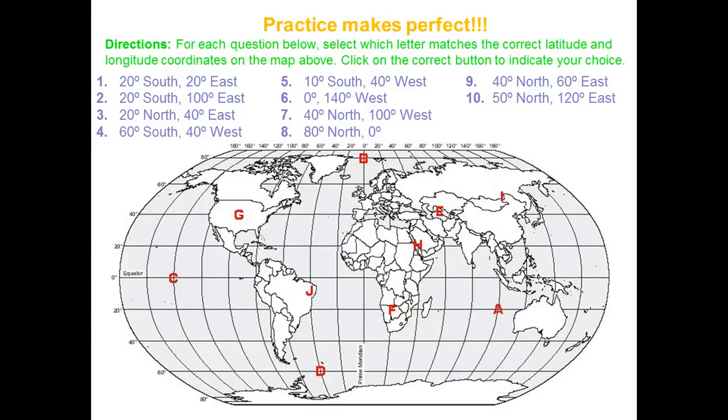Alright, so this is a thing for you to practice. This is how we use latitude and longitude to locate places. What you need to do in this one is you need to find these coordinates on this map, and then you need to figure out which letter it will do. So, pause that and have a go. And then I'll do the first couple with you.